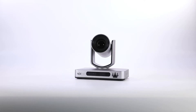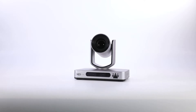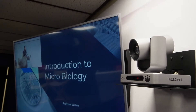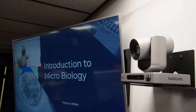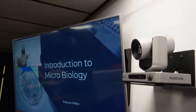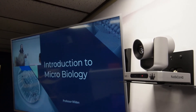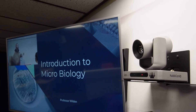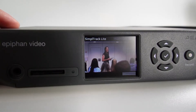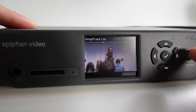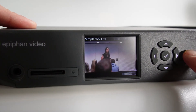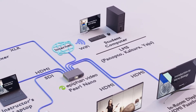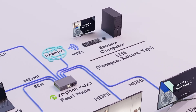The Huddlecam HD SimpleTrack Lite is always ready to track the teacher automatically, so there is no need for a camera operator. Students can easily read information written on a whiteboard and stay informed with teacher presentations and other content. At the end of each class, the video is automatically made available on the Classroom Learning Management System.